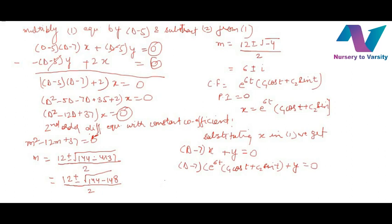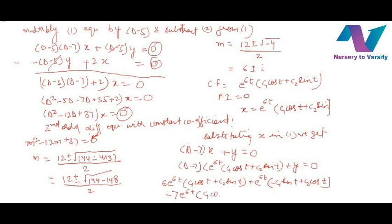Differentiating: 6e^(6t)(c1 cos t + c2 sin t) plus e^(6t)(minus c1 sin t + c2 cos t), then multiplying by minus 7 gives minus 7e^(6t)(c1 cos t + c2 sin t). Collecting terms: 6e^(6t)(c1 cos t + c2 sin t) minus 7e^(6t)(c1 cos t + c2 sin t) plus e^(6t)(minus c1 sin t + c2 cos t) plus y equals 0.